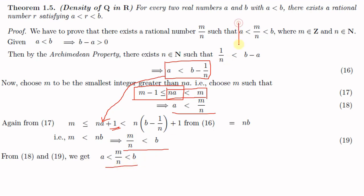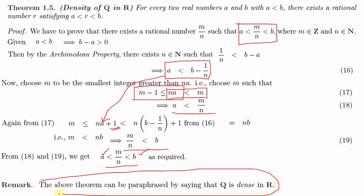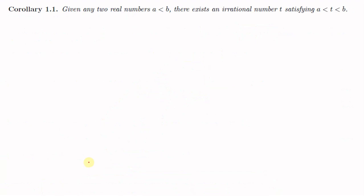So we have proved that between any two real numbers a and b there exists a rational number m/n such that a < m/n < b. This proves that the set of rational numbers ℚ is dense in the set of real numbers ℝ. The above theorem can be paraphrased by simply saying that ℚ is dense in ℝ.